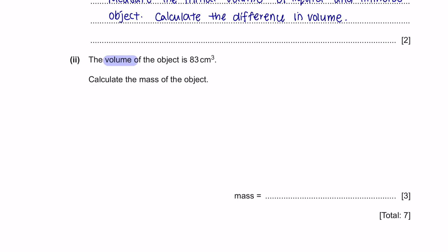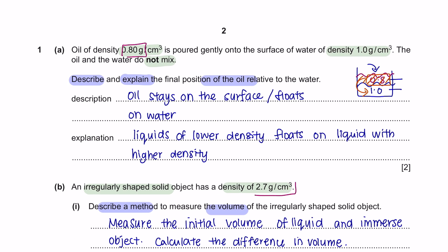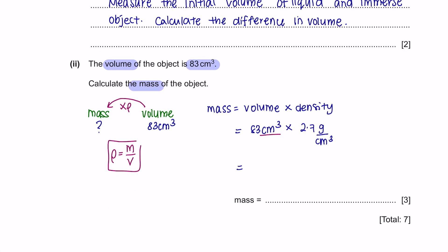Part 2. The volume of the object is 83 centimeter cube. To calculate the mass of the object, we can use the formula density equals mass over volume. So to get the mass, we need to multiply the volume by its density. The density of this object is 2.7 grams per centimeter cube. Make sure your units are all correct. So 83 times 2.7 is 224.1 grams. For your final answer, you need to make sure that you convert it into two significant figures, and that would be 220 grams.